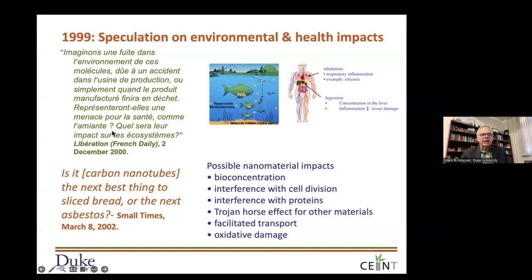A couple years later I summarized this in a publication called Small Times, asking whether carbon nanotubes are the next best thing to sliced bread or the next asbestos. This was all very speculative at the time. We were thinking there could be issues of bioconcentration, interferences with cell division, interference with protein expression — you can see the list.